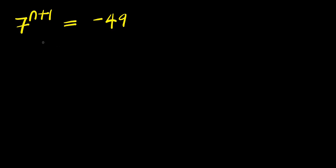Hello. How to solve this exponential problem: 7 to the power of n plus 1 equals negative 49, solving for all values of n that satisfy this equation.